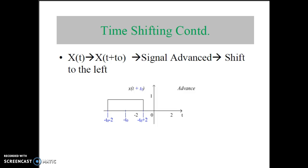Let us consider x(t) once again, shifted by x(t plus t0). The original signal is shifted by t0 time instant, which represents the advance of the signal — you shift the original signal towards the left hand side by t0 time instant. In the original figure, x(t) is present from minus 2 to plus 2. If we shift x(t) to x(t plus t0), the time instants on the left hand side become minus t0 minus 2 and minus t0 plus 2, which represents advance of a signal.